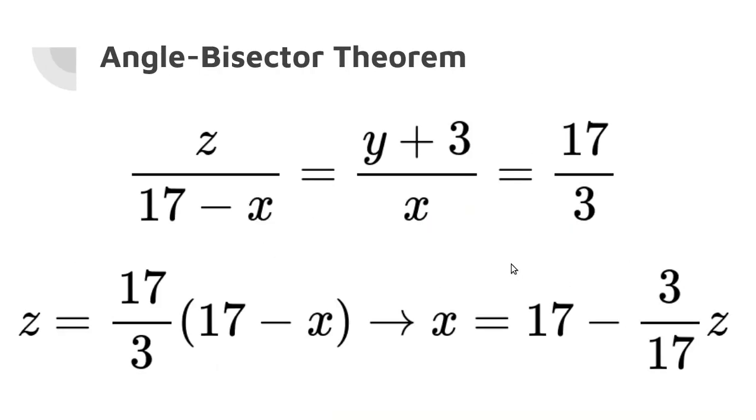So if we go back to the equation, I've written Z over (17 minus X), which was Z was one of the legs, and 17 minus X was part of one of the legs. Sorry, sides. Z was the hypotenuse, but still one of the sides. And then Y + 3 was also one of the sides. And then X was the other part of BC, the other part of that side. So angle bisector theorem tells us that this proportion is true. And then earlier, we found that (Y + 3) over X equals 17 thirds. So I've also written that on the right.